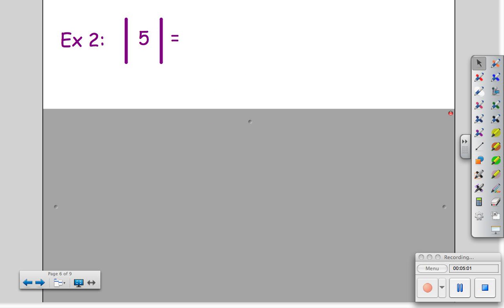Looking at this example, you would read this as the absolute value of 5. Those bars hold that number captive until you can tell what the absolute value is. Once you've given your answer, the absolute value bars aren't necessary anymore, and they cannot be used.